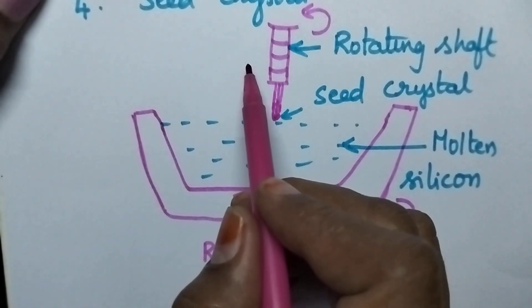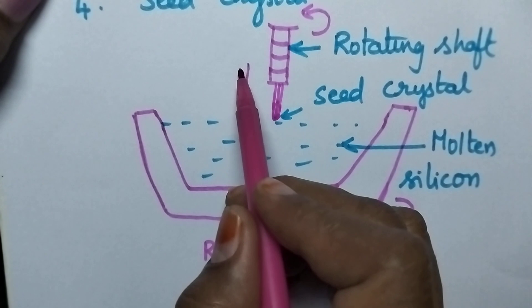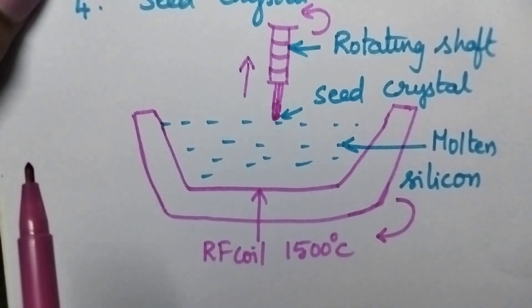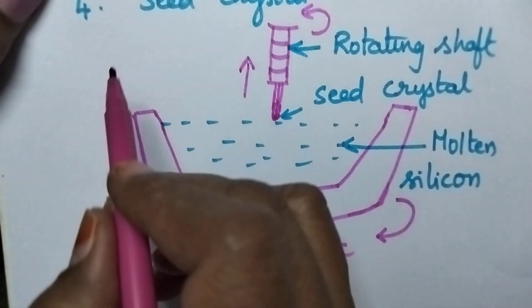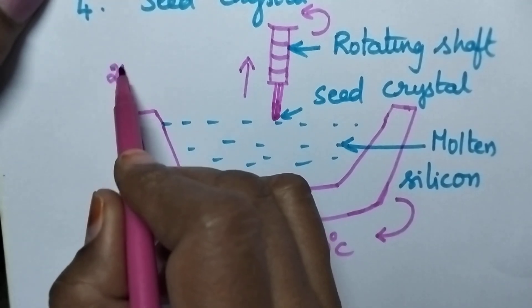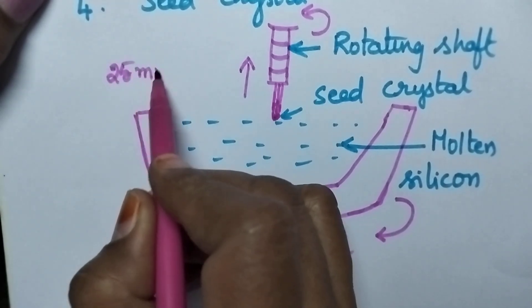At this moment, the rotating shaft will be drawn in upward direction very slowly in such a way that it can move 25 mm per hour.